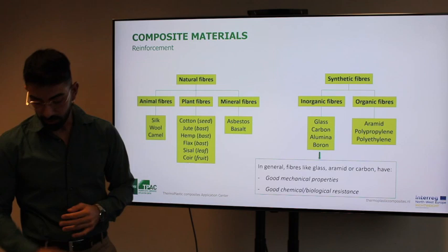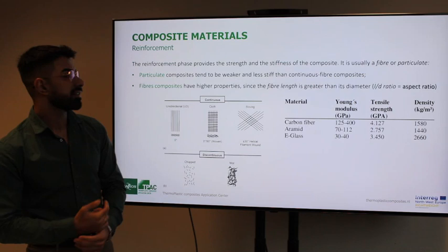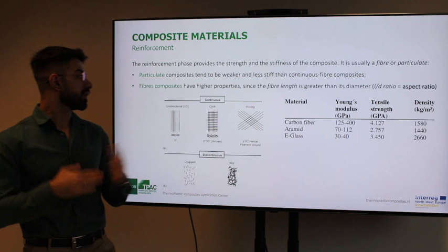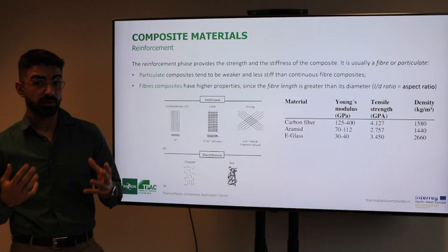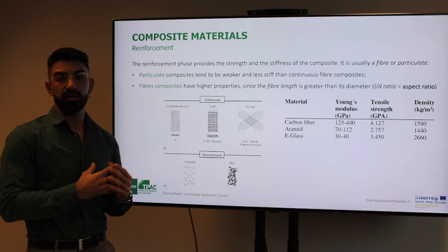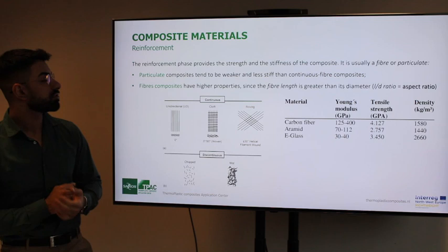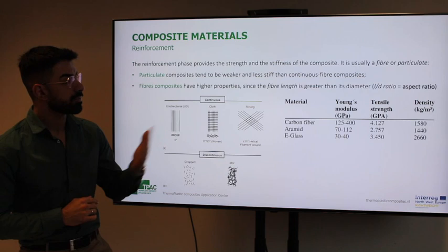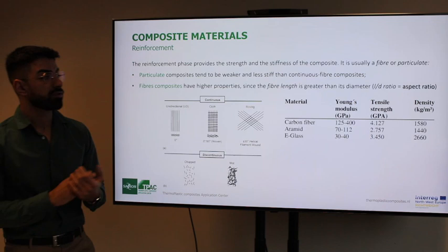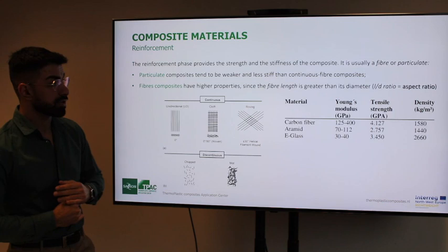The reinforcement phase provides the strength and stiffness of the composite and can be a fiber or particulate. Particulate composites tend to be weaker and less stiff than continuous fiber composites because they are smaller. Fiber composites have longer fibers, giving them higher properties. The aspect ratio — the ratio between the length of the fiber and the diameter — is key: the higher the aspect ratio, the higher the final mechanical properties of the composite.